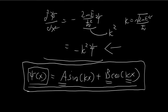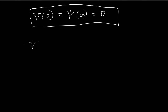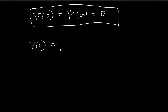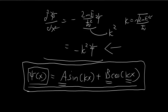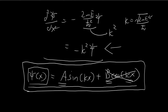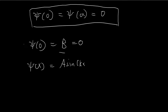Applying the first boundary condition ξ(0) = 0: substituting x = 0 gives A sin(0) + B cos(0) = B = 0. So B = 0 and we can drop the cosine term. Our solution simplifies to ξ(x) = A sin(kx). Now applying the second boundary condition: ξ(a) = A sin(ka) = 0.